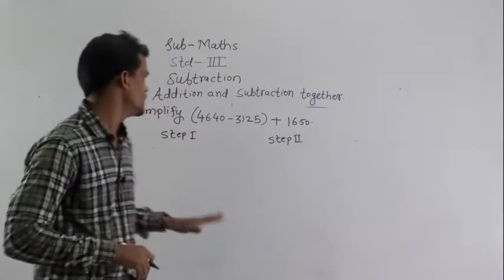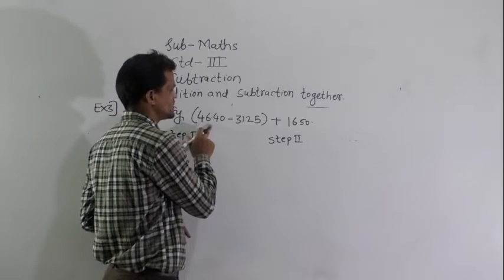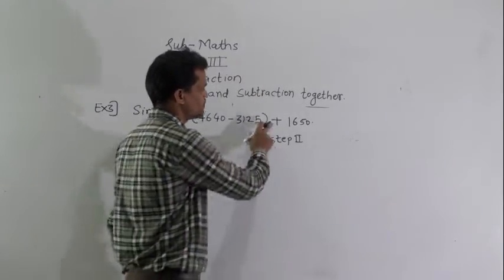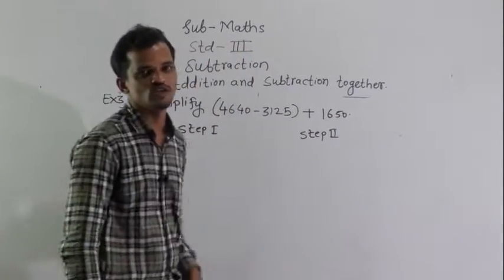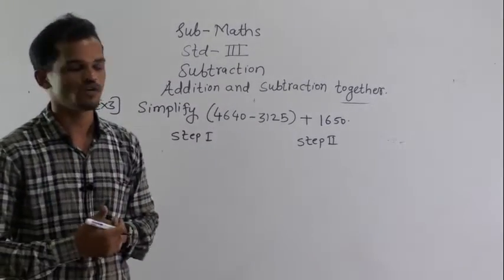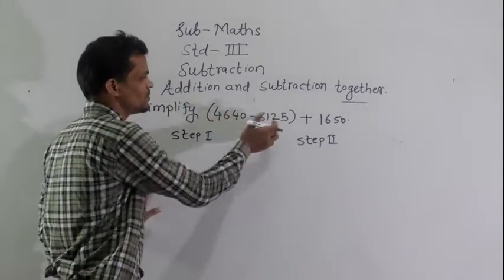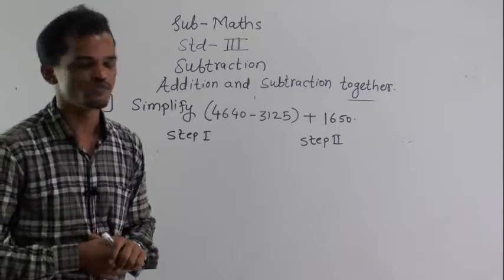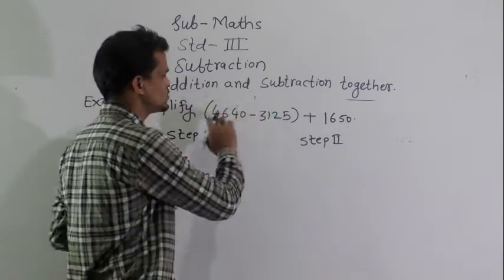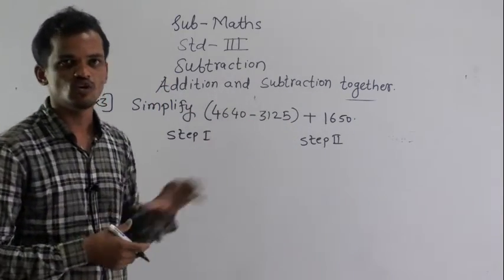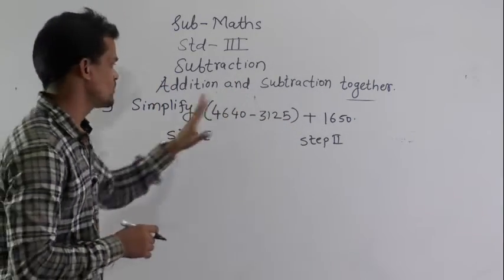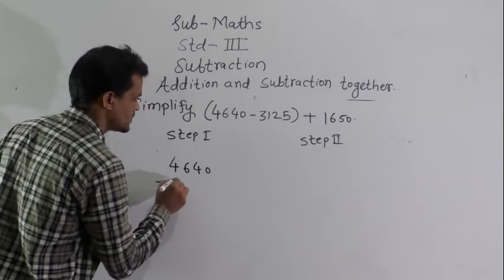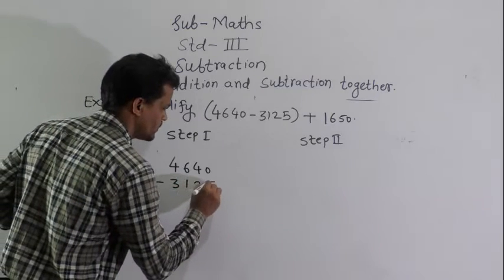Third example: simplify (4,640 minus 3,125) plus 1,650. We will solve this example in two steps. These two numbers are enclosed in the bracket, so that operation you have to do first. Solve the bracket first. First step: 4,640 minus 3,125.